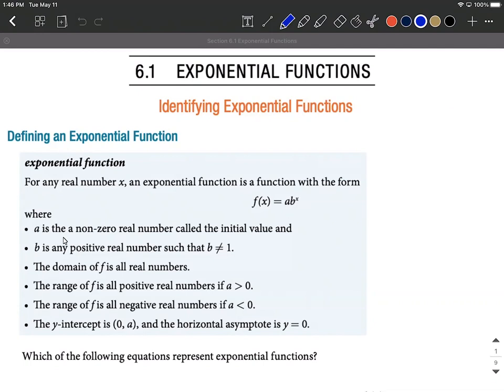All right, we say a can't be zero, because if a was zero, zero times anything is zero. You lose the b raised to the x power. This is also referred to as being the initial value.